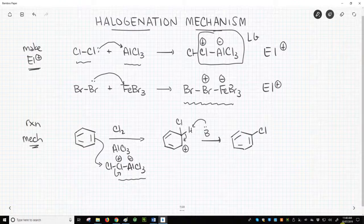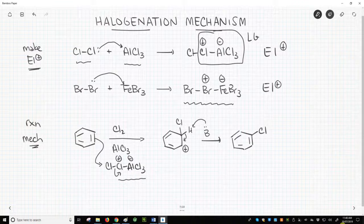Regardless, we now know the reagents for substituting a chlorine, bromine, or iodine onto an aromatic ring through an EAS reaction.